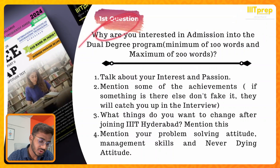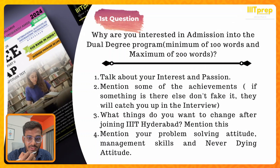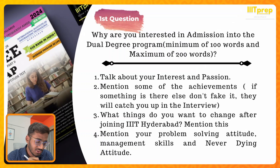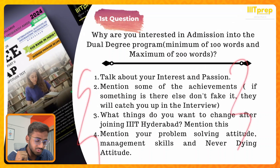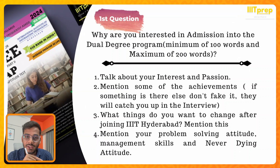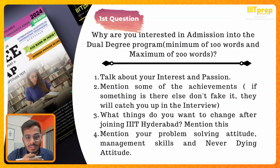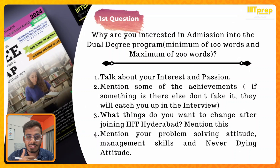For the first question about the dual degree program — why are you looking towards a five-year course when a four-year BTech program exists? Don't directly come to the answer stating the reason. Try to build a story within your answer. A story can be built simply by showing your interest and passion — initially state your interest, your passion, what you're willing to do, and what your future goals are.